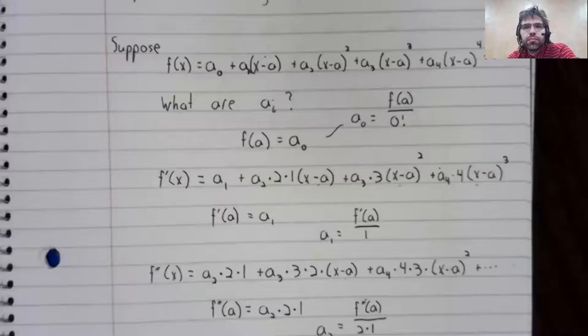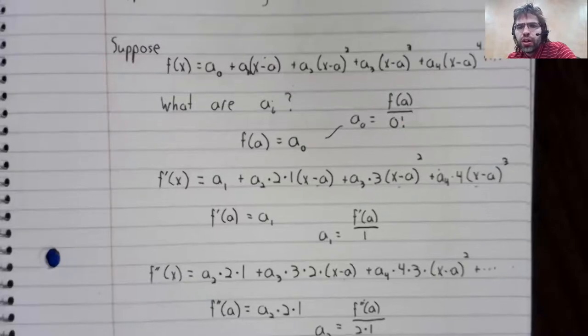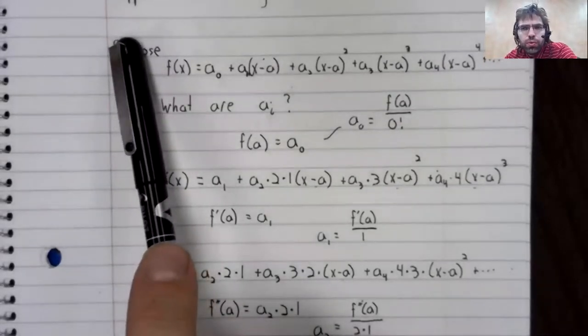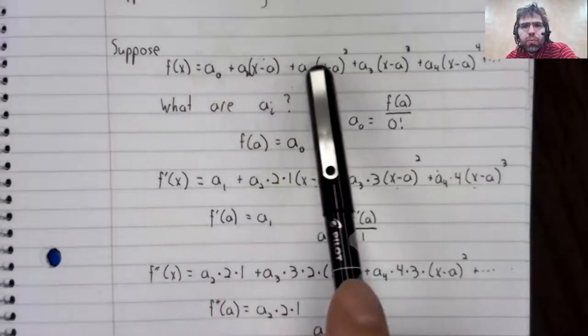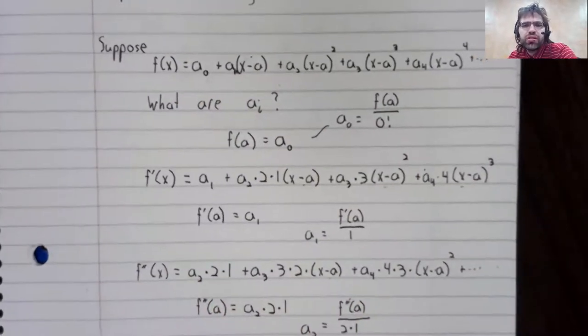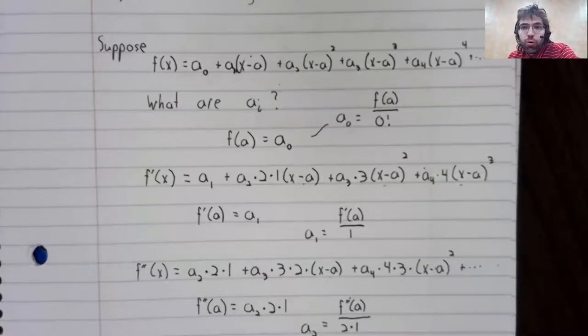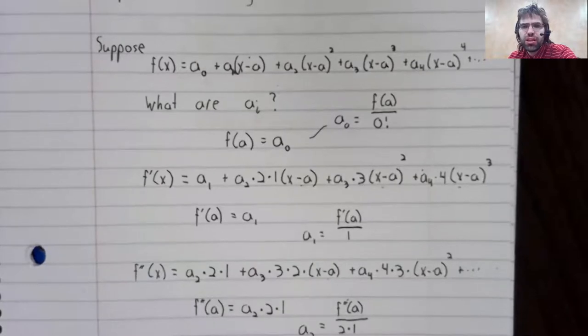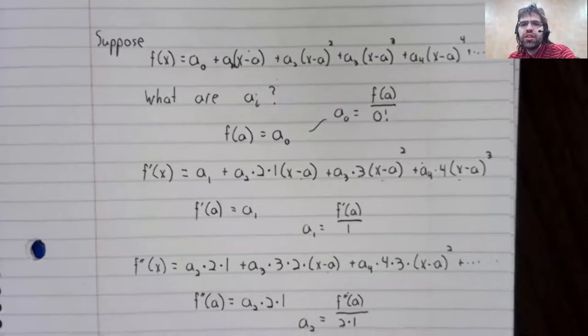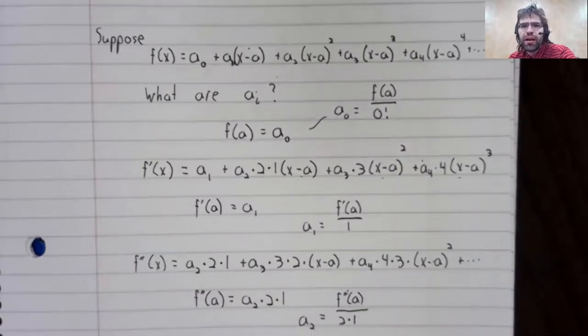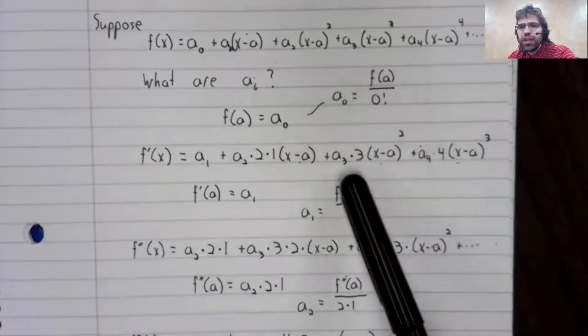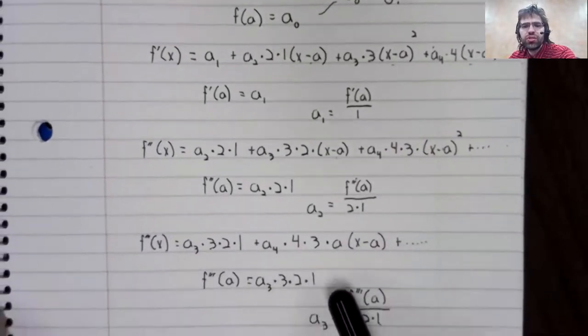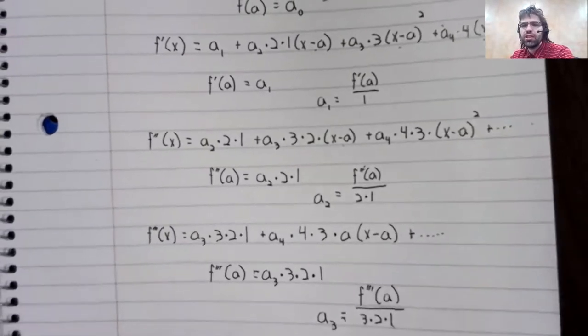So what have we done? We have supposed that the function equals some power series. That supposition might be false. There is no inherent reason that a function ought to equal a power series. But if the function does equal the power series, we have found the coefficients of that power series.